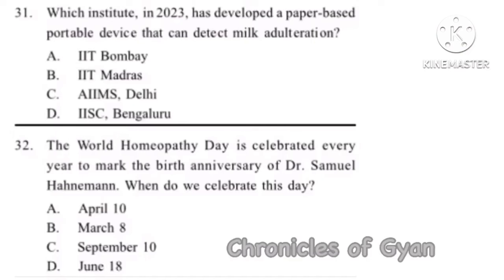Question 31: Which institute in 2023 developed a paper-based portable device that can detect milk adulteration? The Indian Institute of Technology Madras has made a pocket-friendly device that can detect milk adulteration in 30 seconds. The correct answer is Option B, IIT Madras.